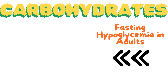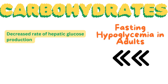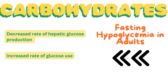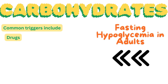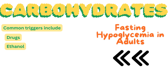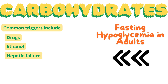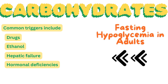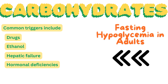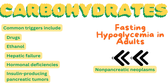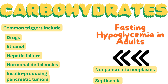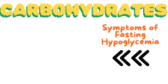Fasting hypoglycemia in adults is typically caused by a decreased rate of hepatic glucose production or an increased rate of glucose use. With more than 100 possible causes, it requires careful evaluation. Common triggers include drugs such as pentamidine, quinine, and sulfonylureas; ethanol, which inhibits gluconeogenesis especially in malnourished individuals; hepatic failure; hormonal deficiencies including lack of growth hormone, glucocorticoids, thyroid hormone, or glucagon; insulin-producing pancreatic tumors; non-pancreatic neoplasms that overconsume glucose; and septicemia, where glycogen stores are depleted.